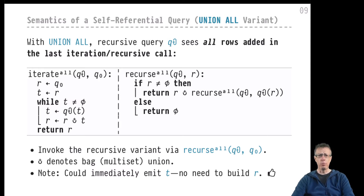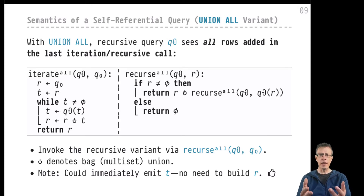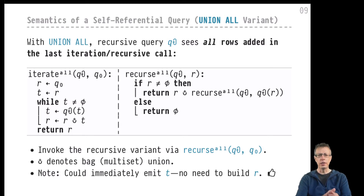Once we have both on the table, we have everything on the table. There is nothing else that comes additionally into the mix to implement recursion in SQL. That's all there is to it. So let's get the union ALL variant out of the way, and we are ready to run a series of very cool examples.